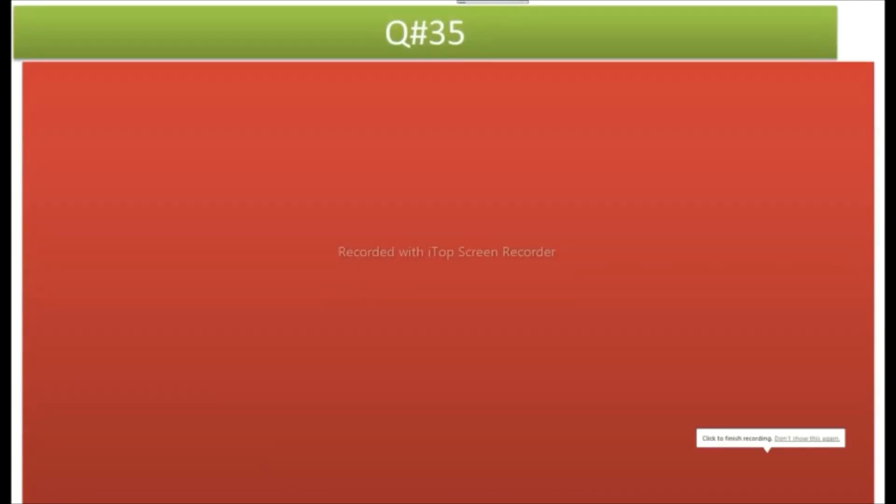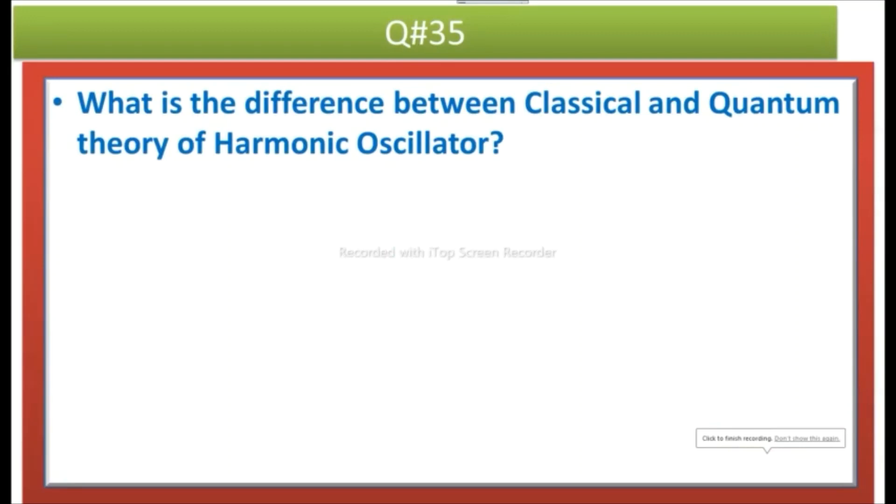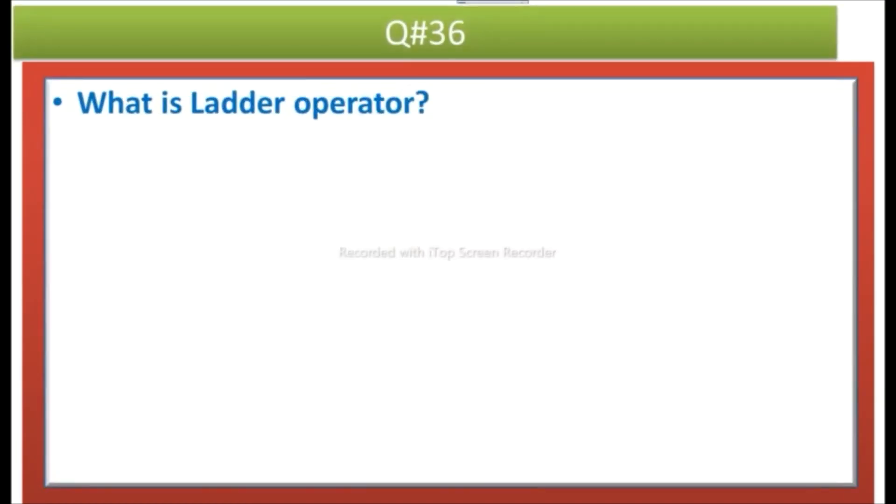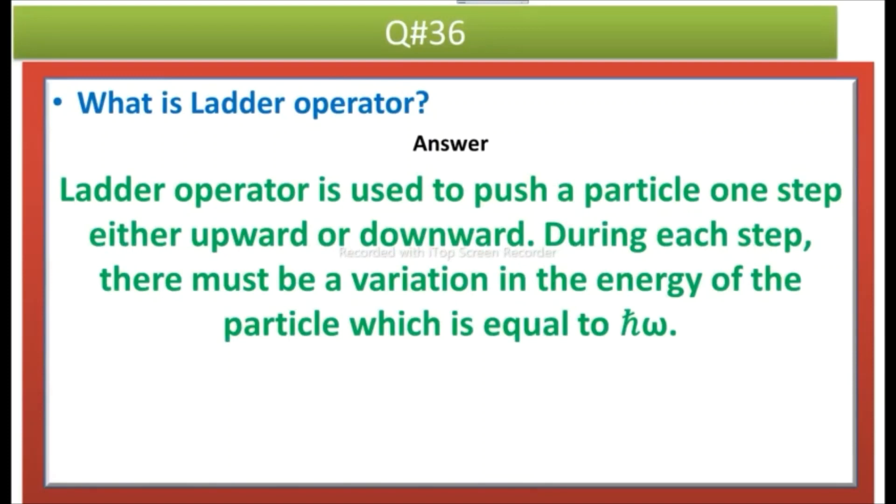Question number 35 is what is the difference between classical and quantum theory of harmonic oscillator? Answer is in classical mechanics energy of oscillator increases or decreases continuously, whereas in quantum mechanics energy of the oscillator increases or decreases in a discrete way. The other difference is that the ground state energy in a classical harmonic oscillator can be zero, but the ground state energy in quantum harmonic oscillator is not zero, rather it is equal to half h-bar omega.